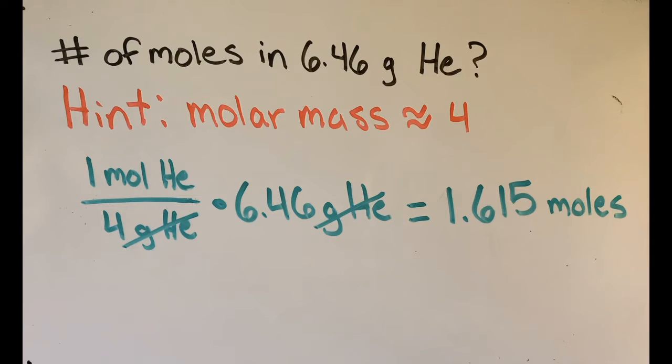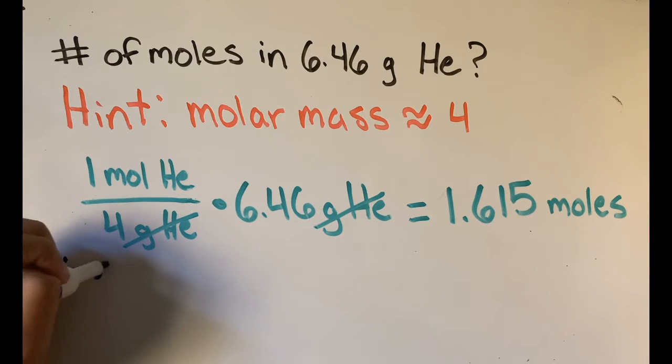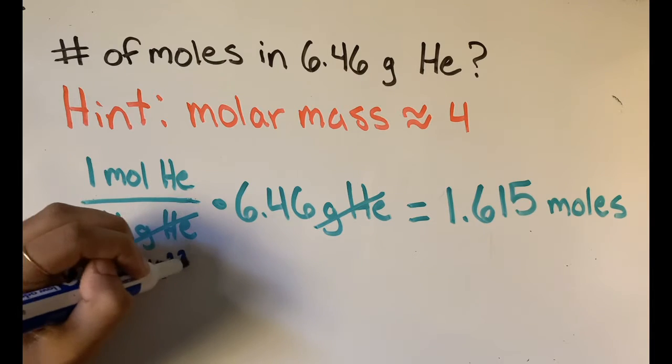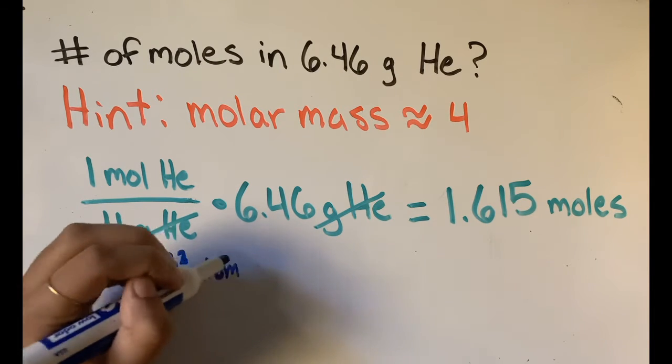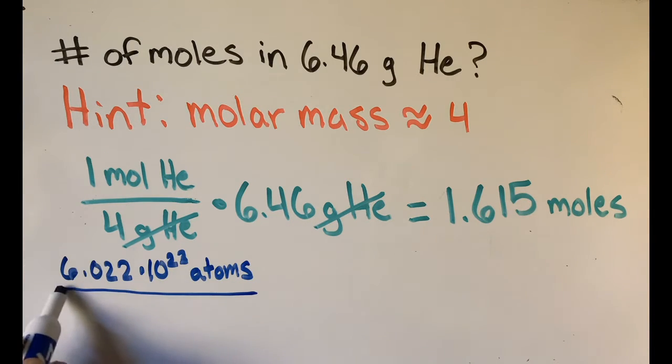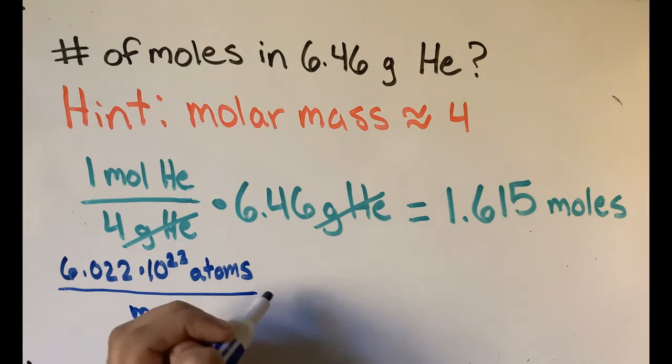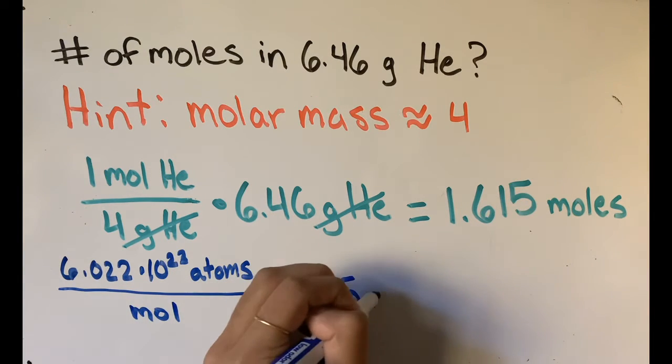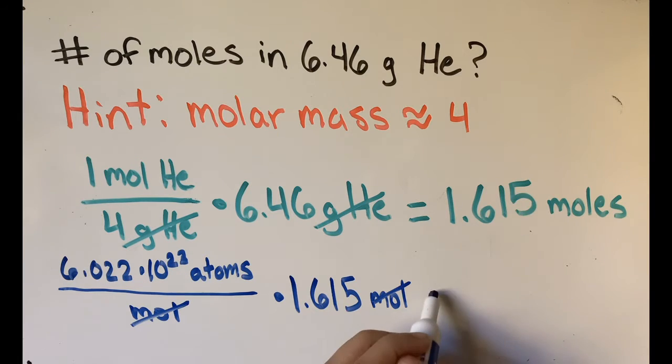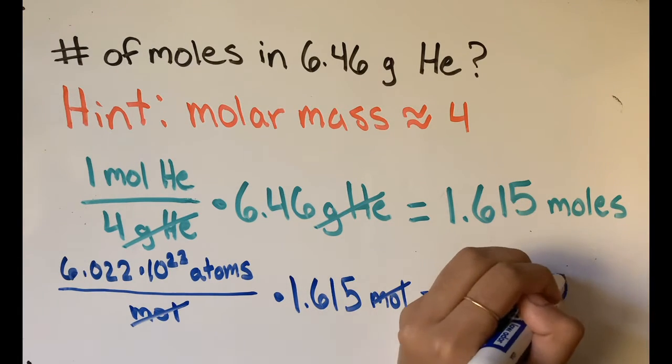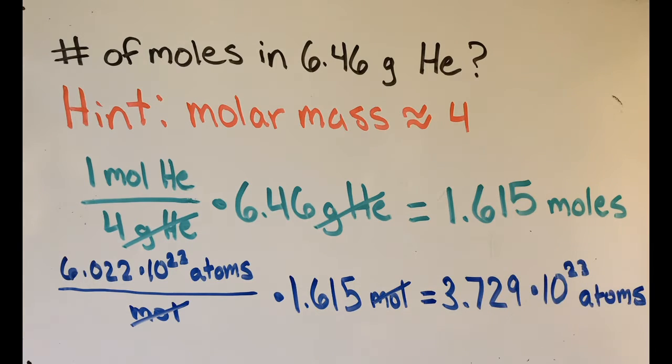We can take this one step further and find out how many atoms of helium that is. There are 6.022 times 10 to the 23rd atoms of an element in a mole, as you probably remember from the last video. That, multiplied by the amount of moles we have, should tell us how many atoms there are. In this case, there are 3.729 times 10 to the 23rd atoms.